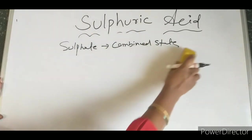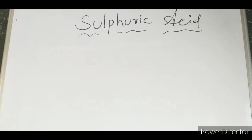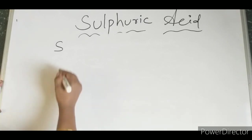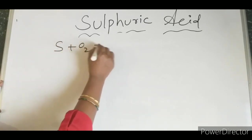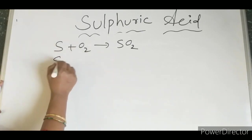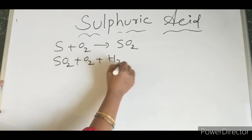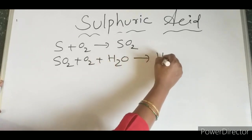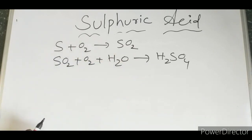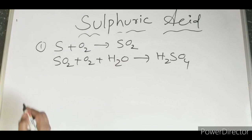We will look at some general methods of preparation. The first method: when non-metals like sulfur undergo oxidation, they give rise to sulfur dioxide. This sulfur dioxide, with further oxidation and addition of water, gives rise to H2SO4.